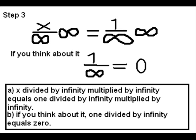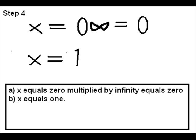So, if 1 divided by infinity equals 0, then x equals 0 times infinity, which still equals 0.